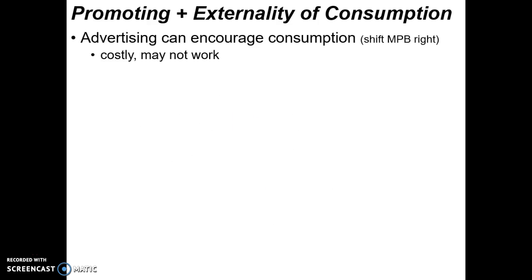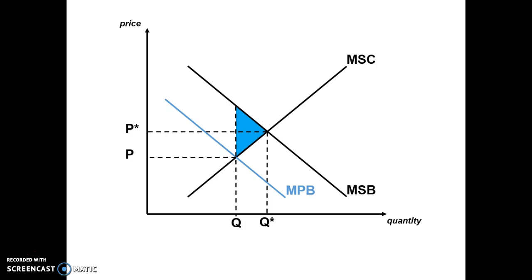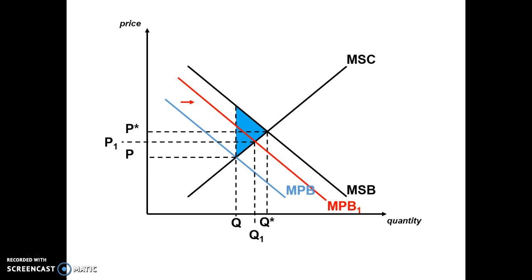A third option is advertising, which encourages consumption. The problem is that advertising is costly and may not work — changing consumer habits is very challenging. But if successful, I diagram it by drawing MPB and MSB curves and then shifting marginal personal benefit to the right. Successful advertising convinces people it's in their interest to consume the good — like getting a flu shot or buying a hybrid car. Quantity moves closer to Q star and the wedge gets smaller, meaning some potential welfare gain is being realized.